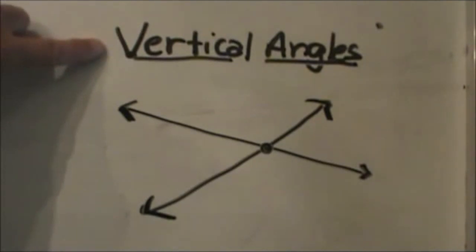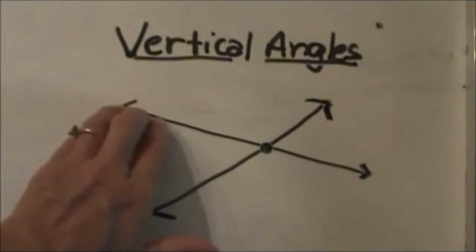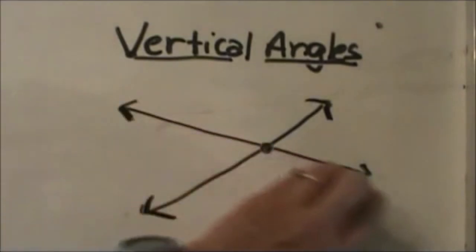Vertical angles are angles that are across the street from each other. So you always look at vertical angles in relation to two lines.